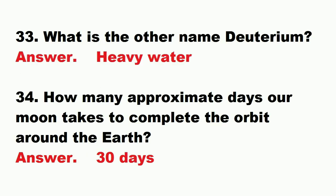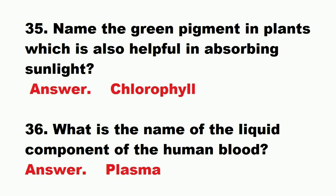Question: what is the other name for deuterium? Answer: heavy water. Question: how many approximate days does our moon take to complete its orbit around the earth? Answer: 30 days. Question: name the green pigment in plants which is also helpful in absorbing sunlight. Answer: chlorophyll.